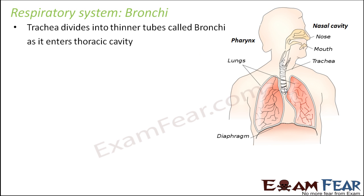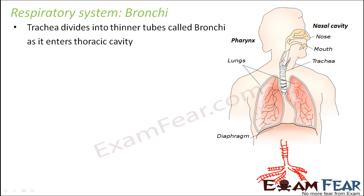The trachea goes up to the mid thoracic cavity, after which it gets divided into bronchi. It branches out into three tube-like structures towards the right lung and into two tube-like structures towards the left lung. These tube-like structures are known as the bronchi.